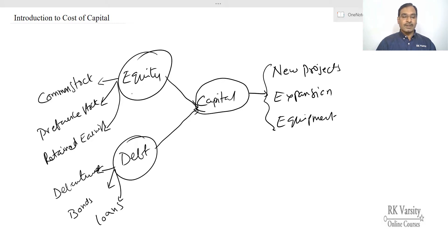When they borrow money from different sources like common stock, preference stock, retained earnings, debentures, bonds, and loans, the investors who are lending or investing this money have an expected return. Suppose a common stockholder is investing in the equity shares of a company, he will have a certain required rate. We call this the required rate of return.